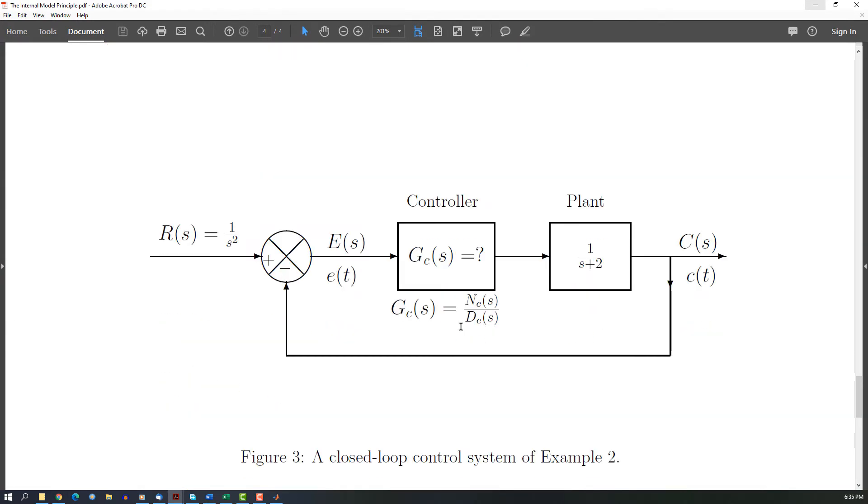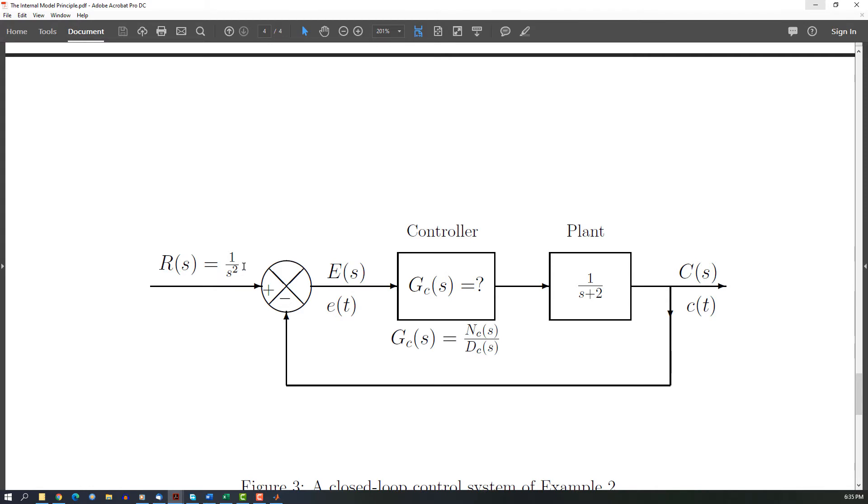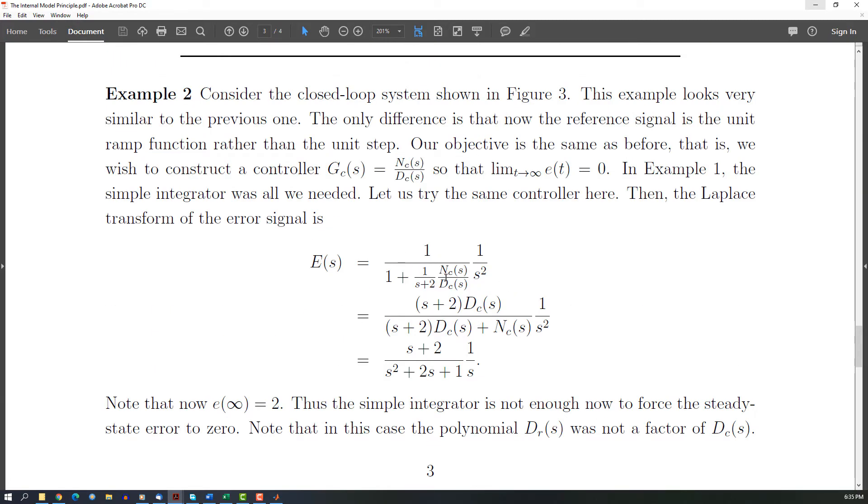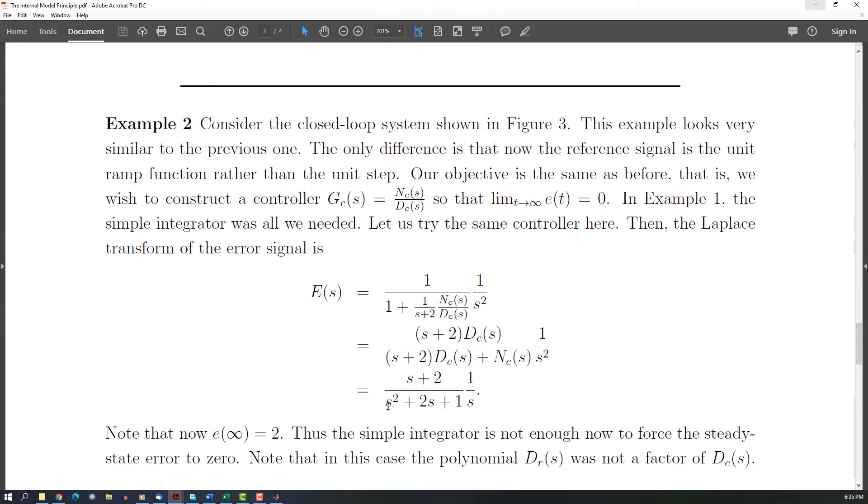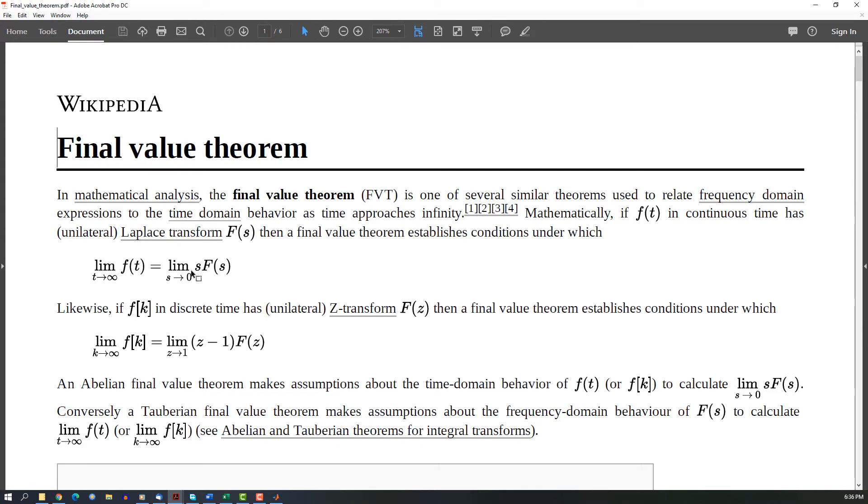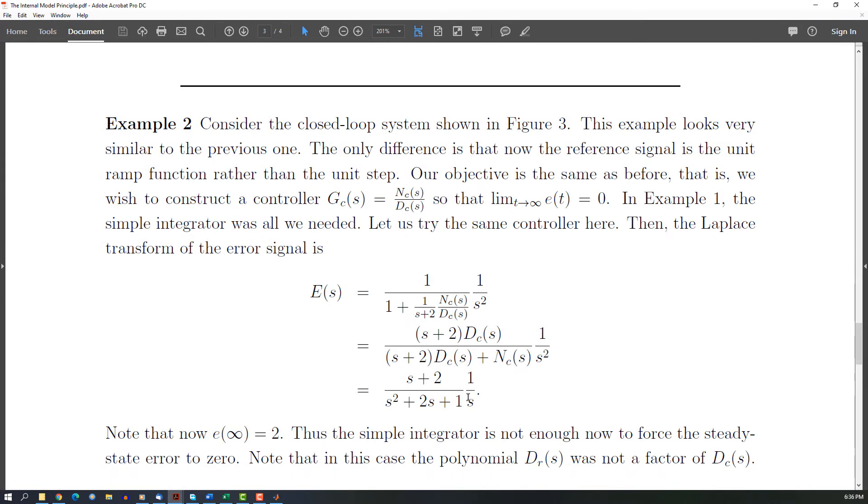Now we consider a little bit more complicated - we track a ramp. If you use the same controller you have the system like this. When you use the final value theorem with s and s equal to zero, you will have this equal to two, so it's not stable, right? It's not tracking. It's stable somehow, but it's not tracking.